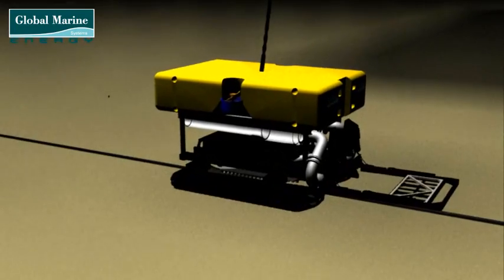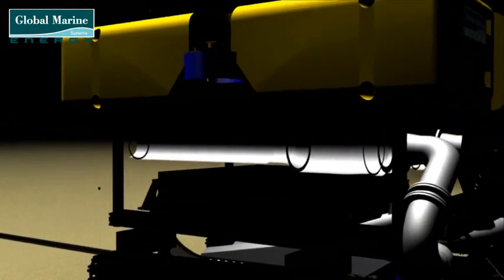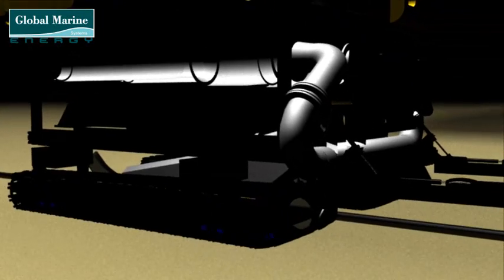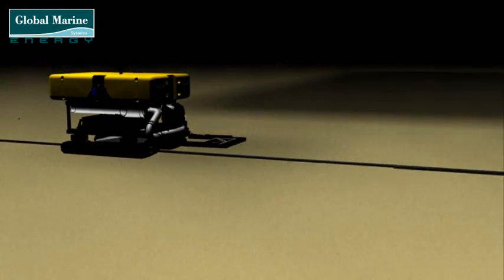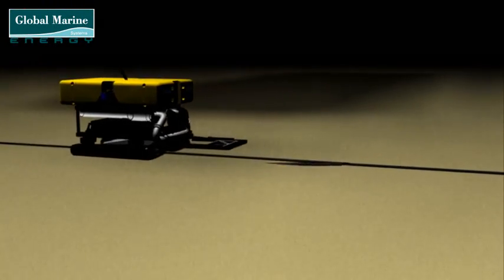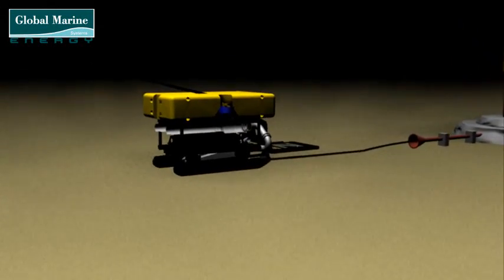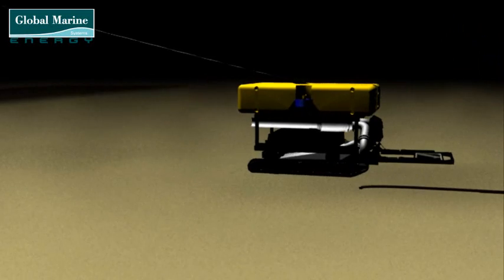The ROV begins burial back towards the initial foundation, before travelling along the cable in the opposite direction toward the next J-tube. The ROV will finish trenching close to the J-tube and then make a measurement run along the cable to confirm its depth.